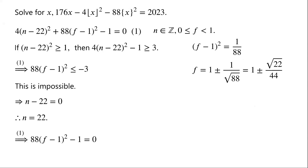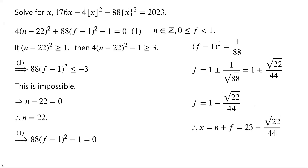As f is less than 1, so f equals 1 minus the square root of 22 over 44. We have found n and f. So x equals n plus f, which is equal to 22 plus (1 minus the square root of 22 over 44), which is 23 minus the square root of 22 over 44. This is the only solution of the given equation.